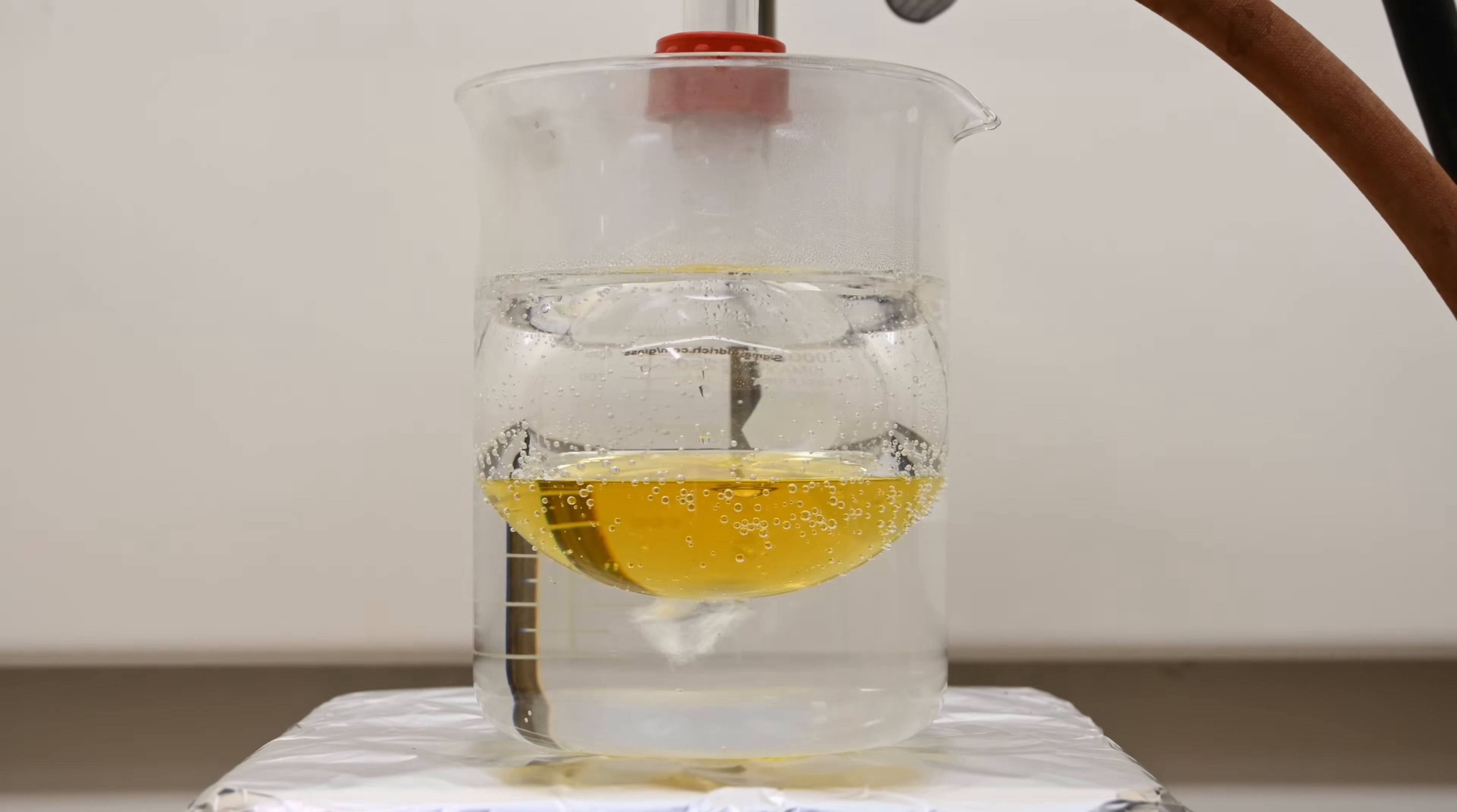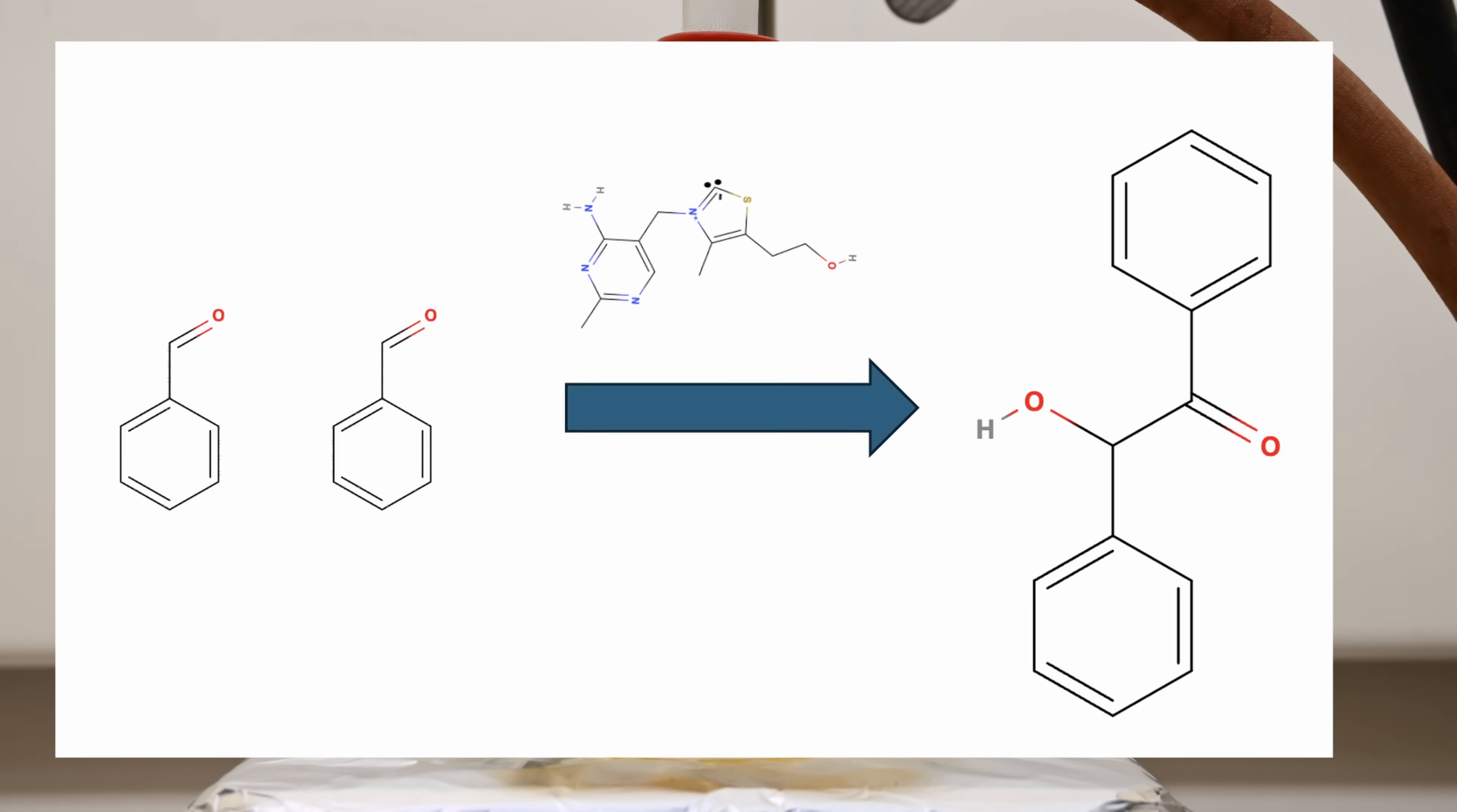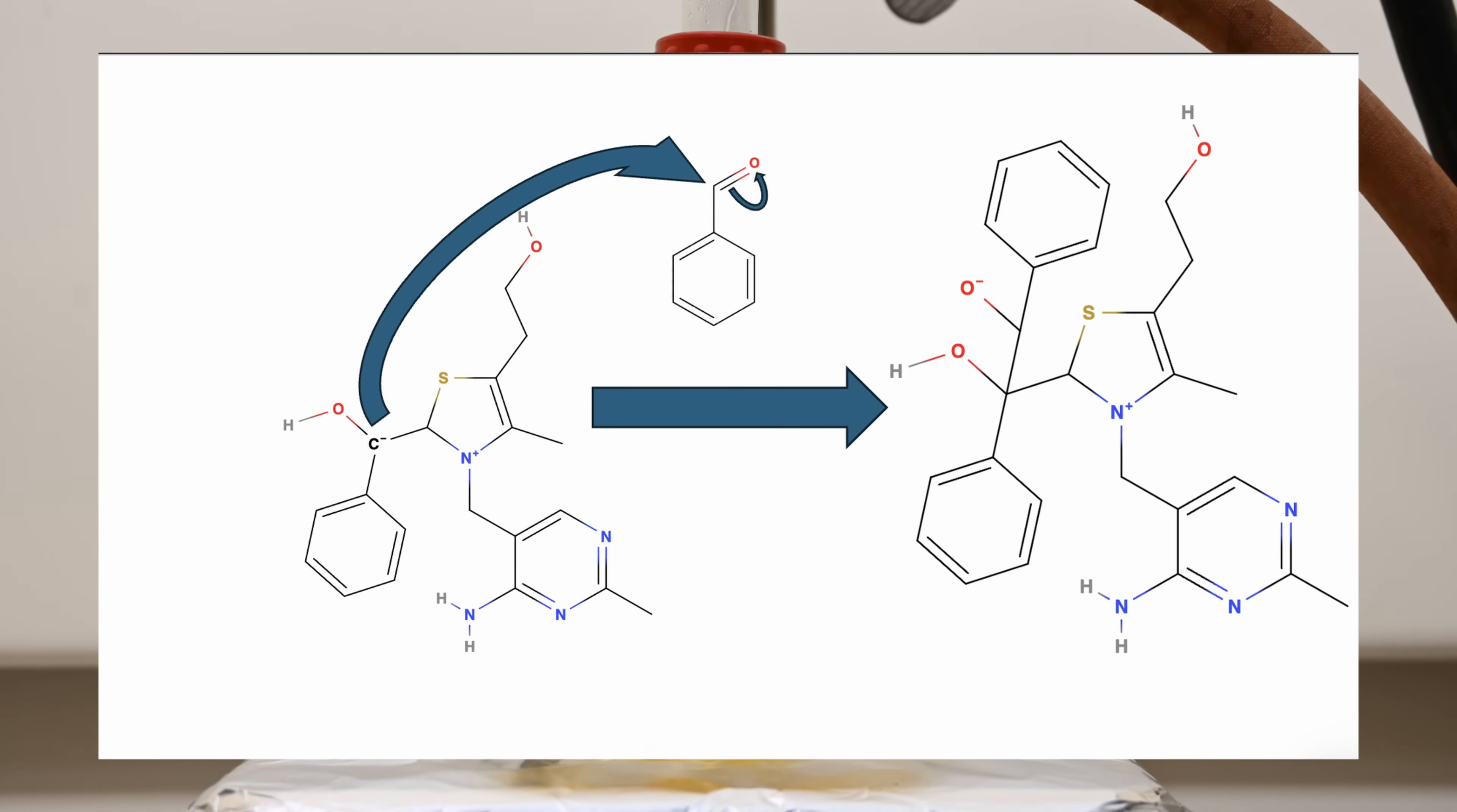The reaction occurring is known as a benzoin condensation, where two benzaldehyde molecules join together to form benzoin, with thiamine, vitamin B1, acting as a catalyst. In simple terms, thiamine briefly changes the normal behavior of benzaldehyde. Normally, benzaldehyde is more likely to attract electrons, acting as an electrophile, but when thiamine activates it, the molecule turns into one that can donate electrons, acting as a nucleophile.